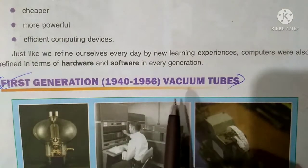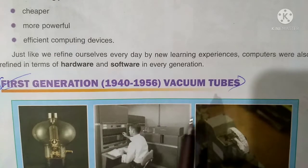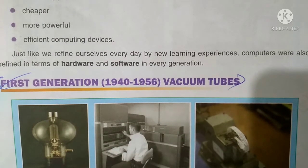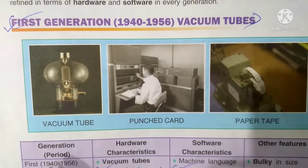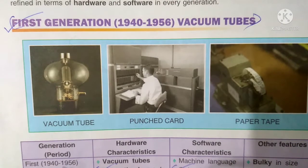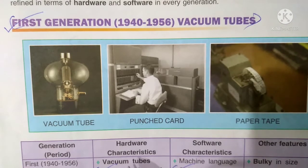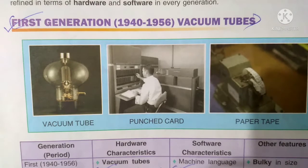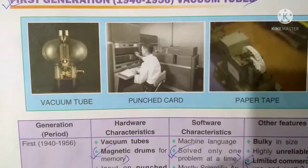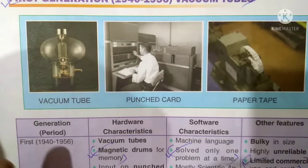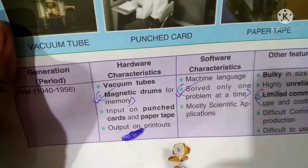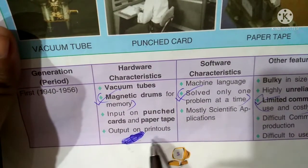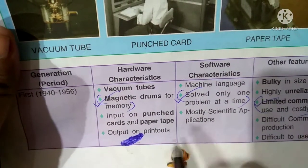First Generation — Vacuum Tubes. Generation period: 1940 to 1956. Hardware characteristics: vacuum tubes and magnetic drums for memory. Input was via punched cards and paper tape. Output was on printouts.